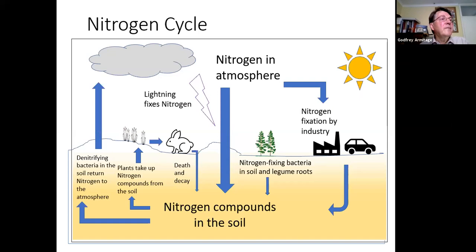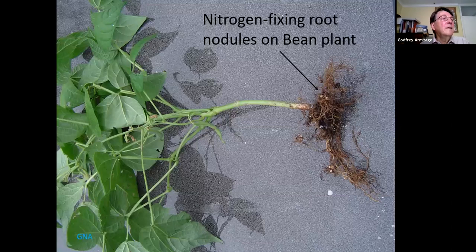Huge amounts of nitrogen have been fixed industrially since the Haber-Bosch process, used to make fertilisers and explosives, started in the First World War. This has contributed to a phenomenal increase in agricultural output but also to eutrophication — enrichment of aquatic ecosystems and loss of biodiversity. Nitrogen is also fixed by root nodules: bacteria, whether free-living in the soil or in root nodules of trees and bean family plants, fix nitrogen extremely efficiently.